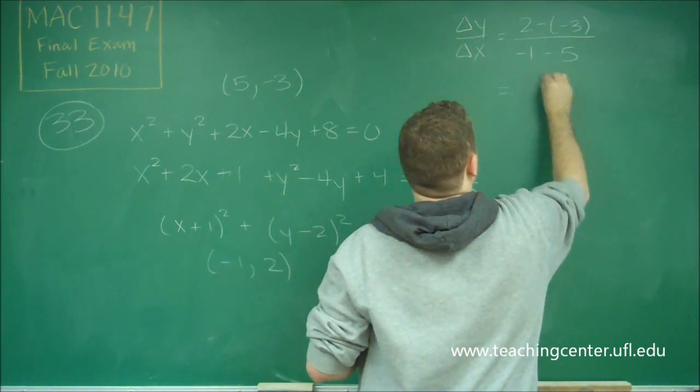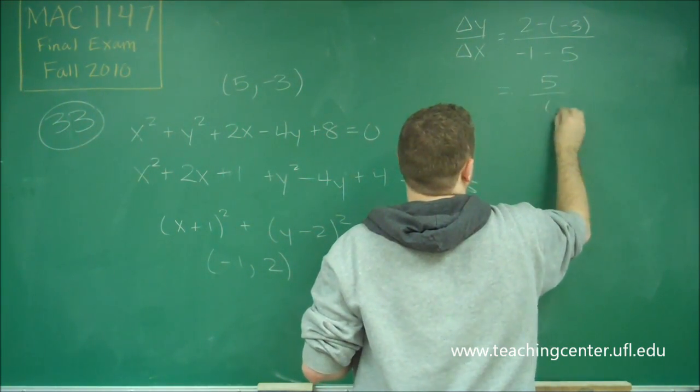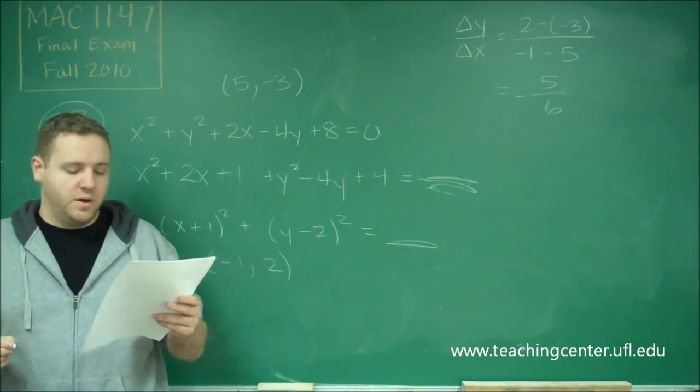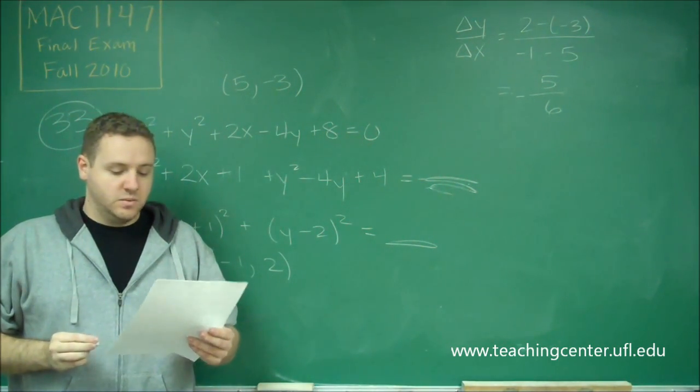So on the top, we get 5. On the bottom, we get negative 6. So we get the slope of negative 5 sixths, which is choice E.